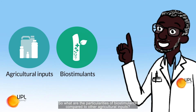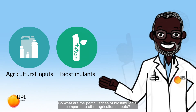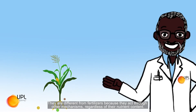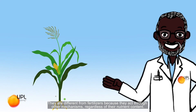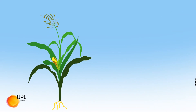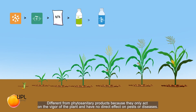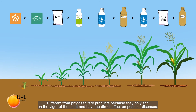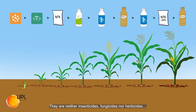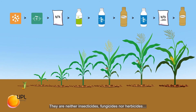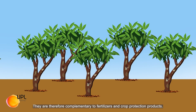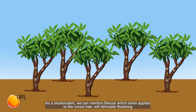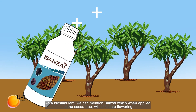What are the particularities of biostimulants compared to other agricultural inputs? They are different from fertilizers because they act through other mechanisms, regardless of their nutrient content. They are different from phytosanitary products because they only act on the vigor of the plant and have no direct effect on pests or diseases. They are neither insecticides, fungicides, nor herbicides. They are therefore complementary to fertilizers and crop protection products.